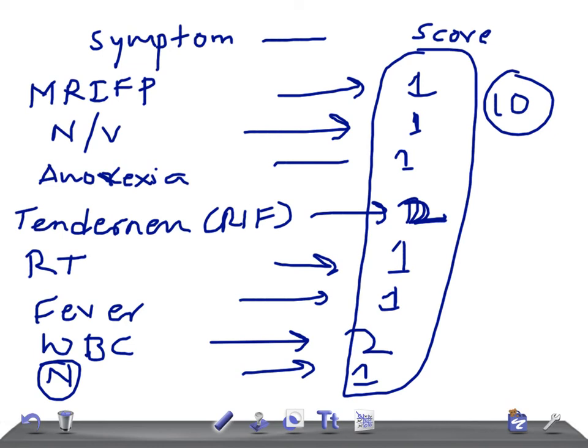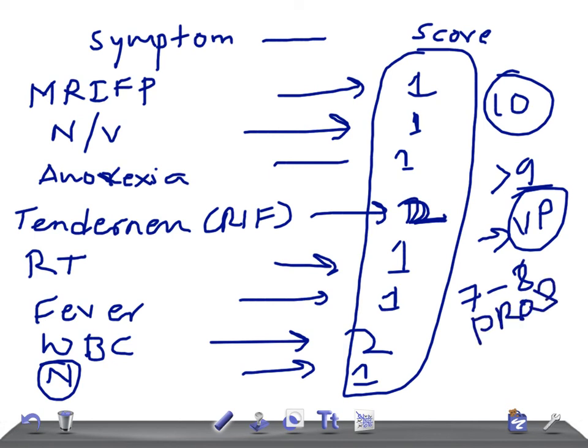So if a patient has a score of more than 9, means, probably, he's having very probably, we can call it as appendicitis. And if he has a score around 7 to 8, probably, we can call it probable. And if he has a score of 5 to 6, then we can call it as possibly.